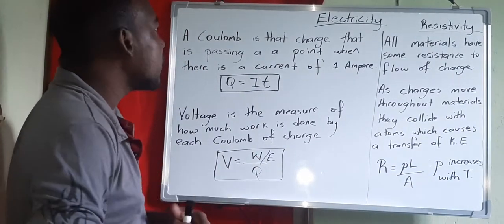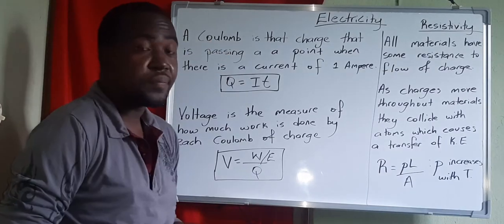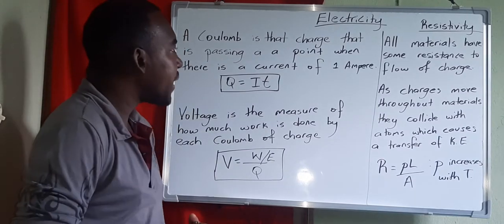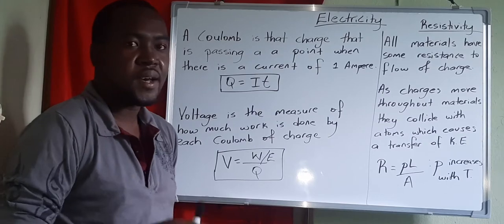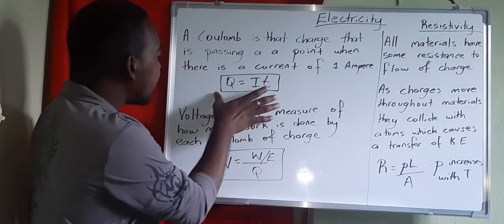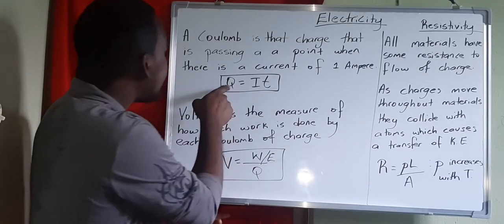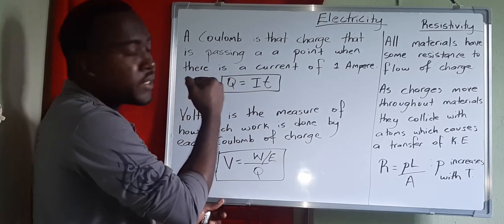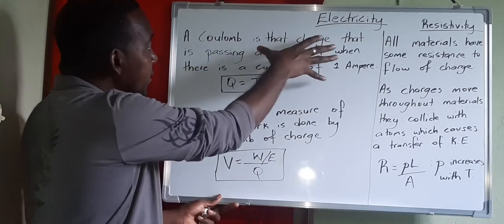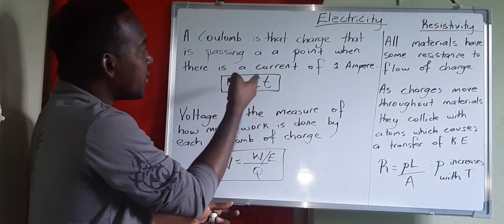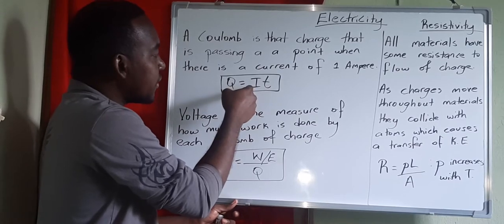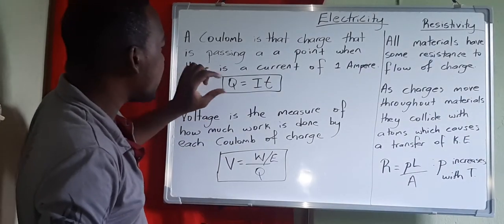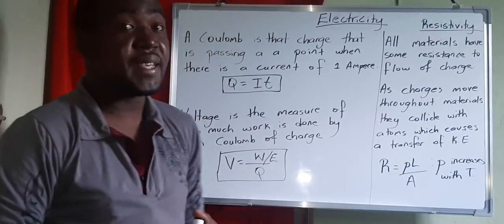There are certain terms we'll encounter in electricity. One is the coulomb and another is voltage. A coulomb is the charge passing at a point when there is a current of one ampere, giving us Q equals IT. So Q is the amount of charge, measured in coulombs.